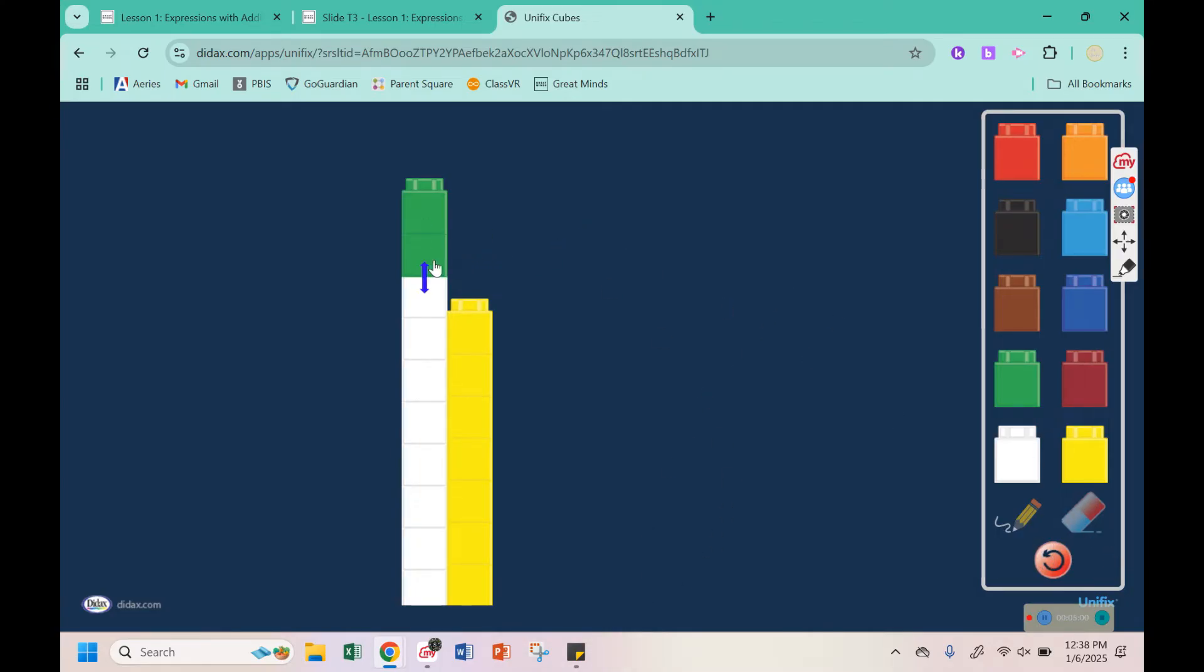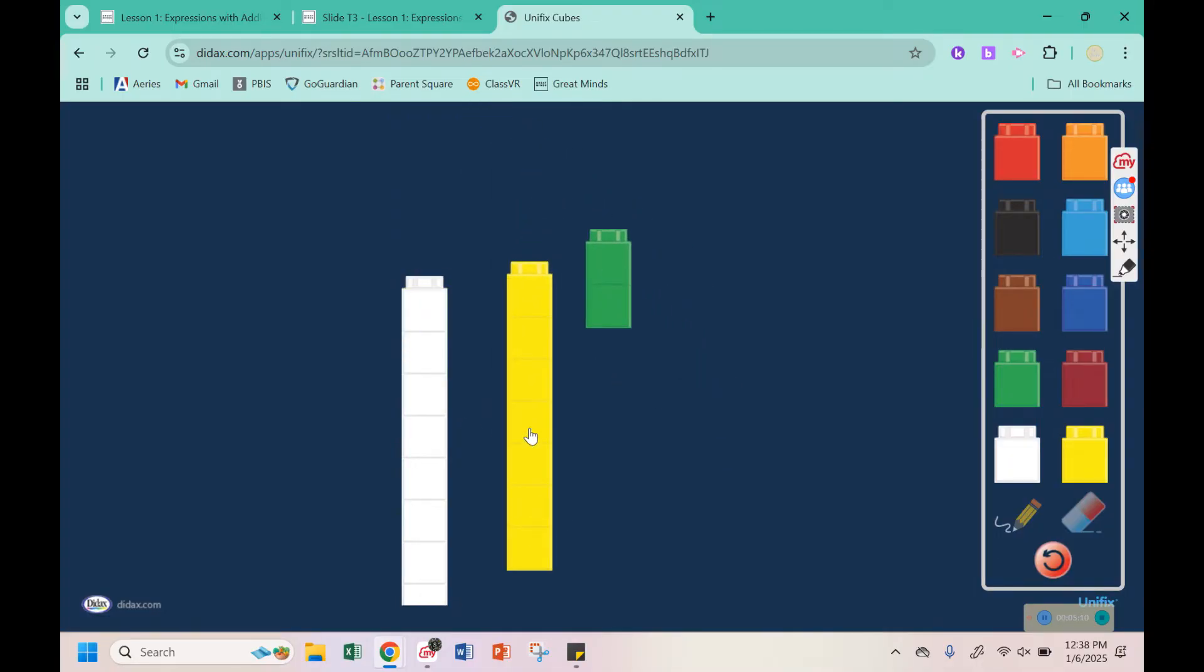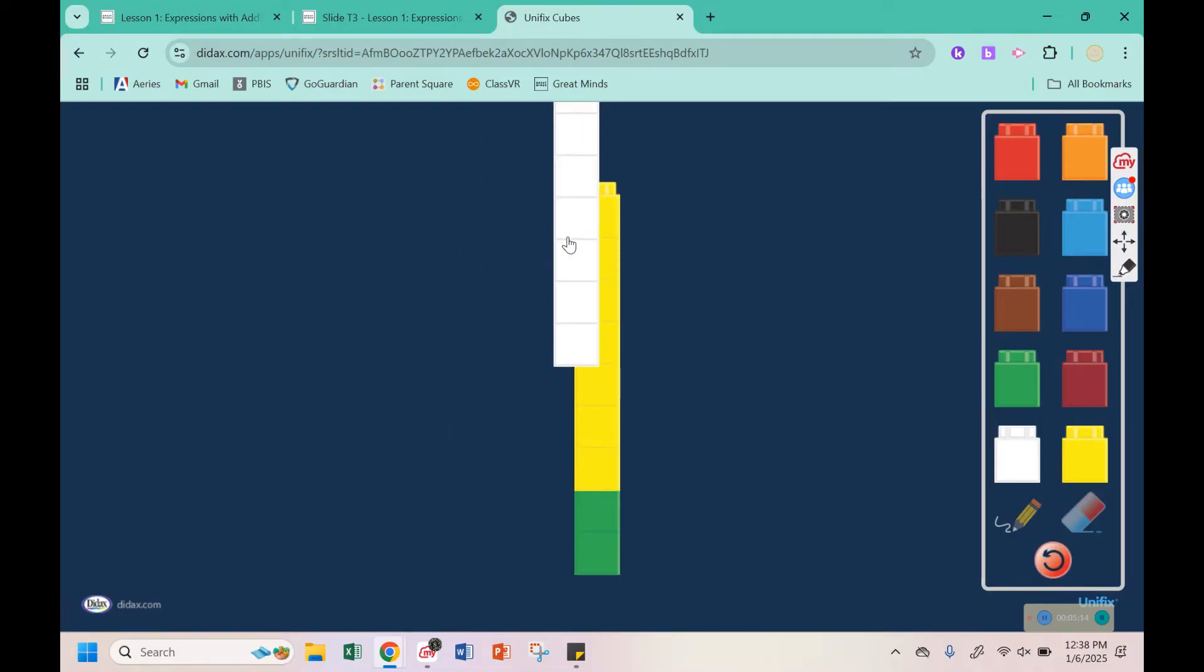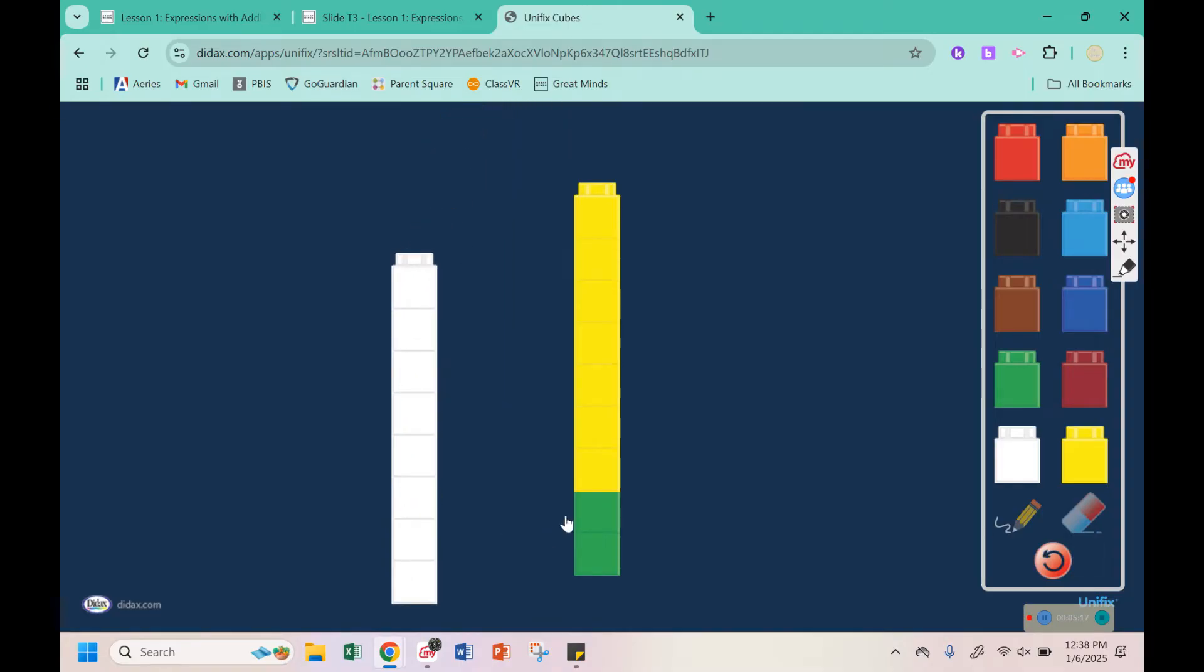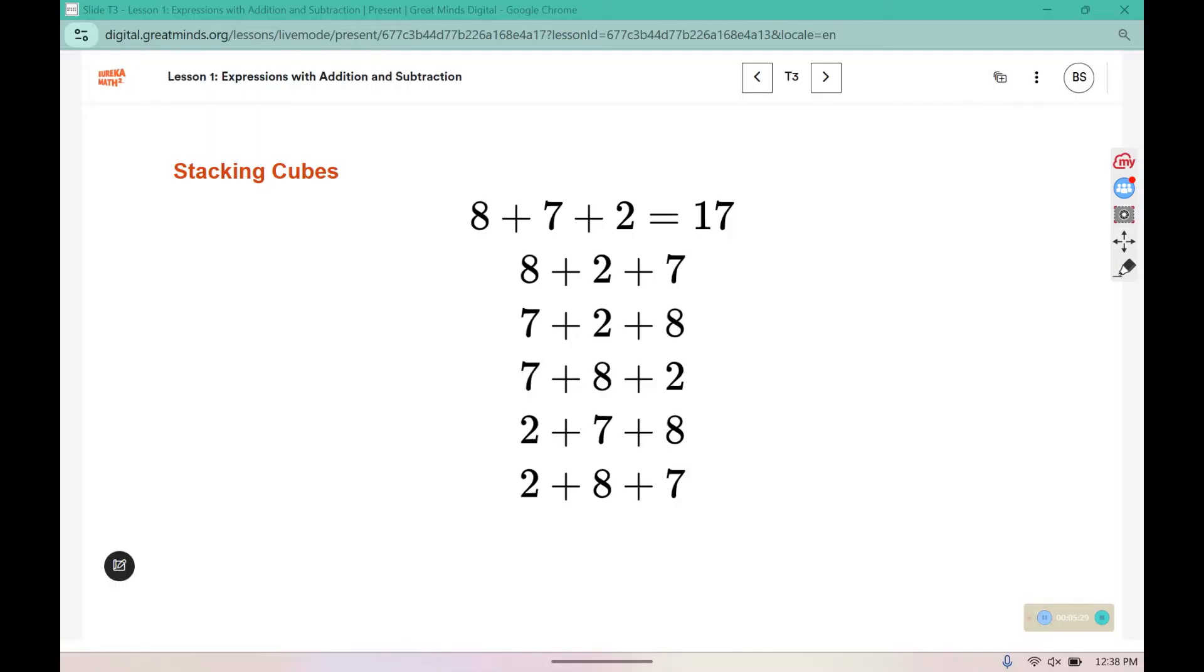Does it matter if I change the order in which these cubes are stacked, like if I put the yellow on top of that and then the green on top of those, or if I started with the green first and stacked the yellow on top and then the white on top of that? Does my answer change if I change the order in which I add? No. Every time I'm going to end up with 17 cubes.